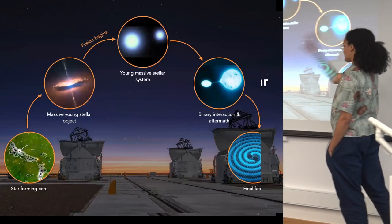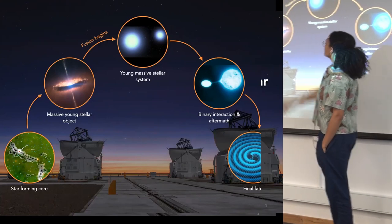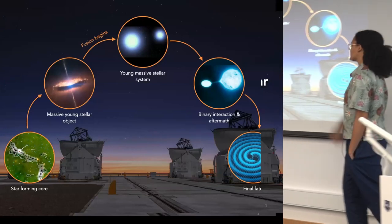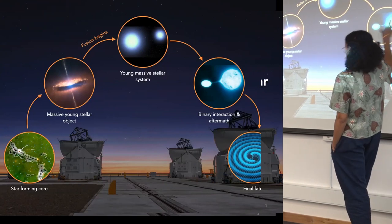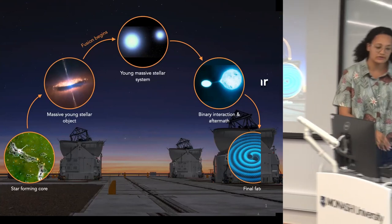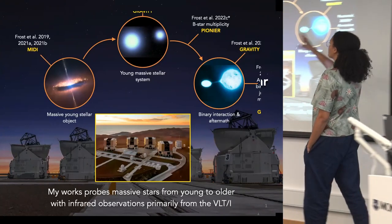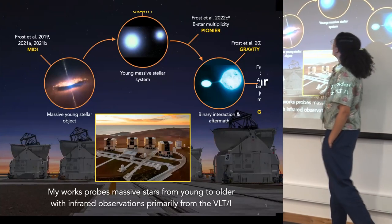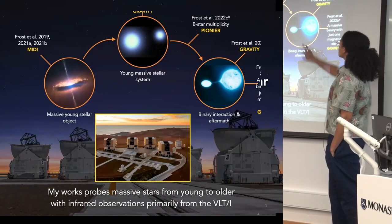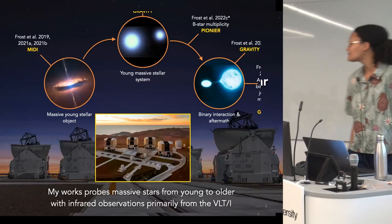Here's a very simplified massive binary evolutionary path. We know that massive stars are forming out of huge star-forming regions — we see massive star-forming cores — and eventually they reach the main sequence. You have a massive stellar system which can then interact and create a gravitational wave at the end, depending on the type of interaction that happens. I've been probing this picture using different observations throughout my PhD and my current work, focusing mostly on three parts: looking at their formation during my PhD, looking at young massive stellar systems or multiple systems on the main sequence, and looking at the aftermath of binary interaction — all probed primarily using infrared interferometry.